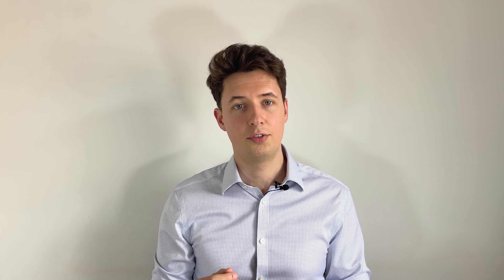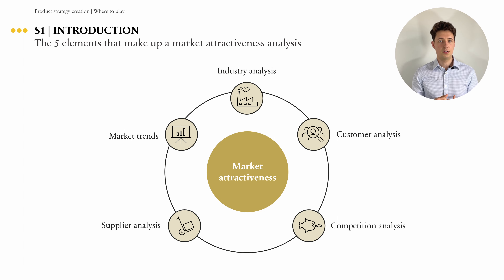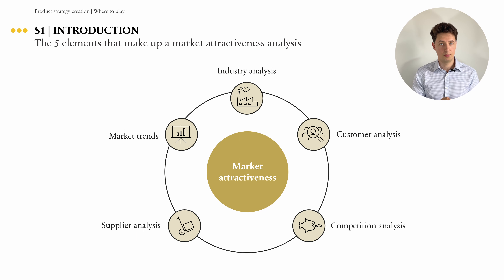So how can we assess the attractiveness of a market? In essence it always comes down to five elements. First, you need to know what the size of the market is, whether it is growing or not, and how much market share you will be able to capture. This is called industry analysis.